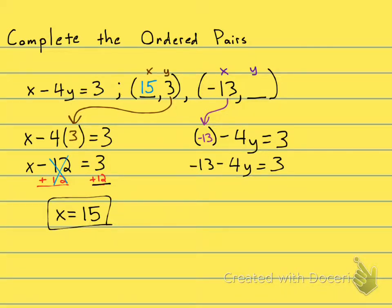To get grumpy old X all by herself, first I'm gonna get rid of the minus 13, so I'll add 13 to both sides. And that way negative 13 plus 13 is zero, so now I have negative 4Y. Don't forget that negative equals 3 plus 13 is 16. Okay, one more step to get grumpy old Y all by herself.